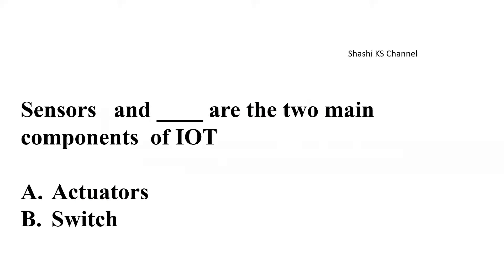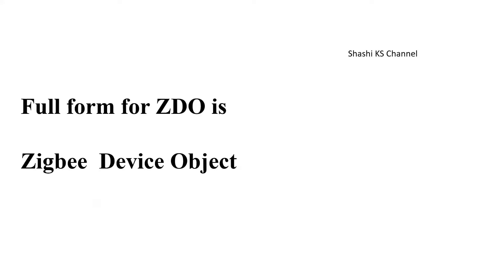Next question is sensors and dash are the two main components of IoT. The options given were actuators, switch repeaters, and gateways. The right answer to this is sensors and actuators are the two main components of IoT. The next question is full form for Z, D, O is dash. The right answer to this is ZigBee device object.